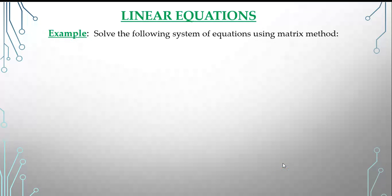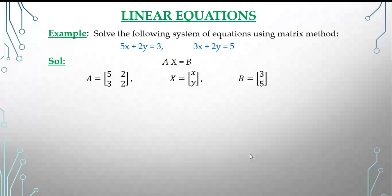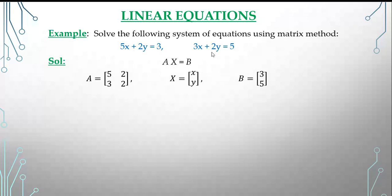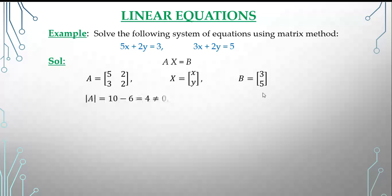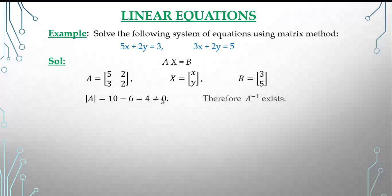Let's take another example — a 2×2 system. We need to solve the equations by the matrix method. The coefficient matrix A is [5, 2; 3, 2], the variable matrix X is [x; y], and B is [3; 5]. First, find the determinant of A: 5×2 − 2×3 = 10 − 6 = 4, which is not zero, so the inverse exists.